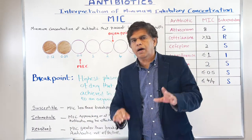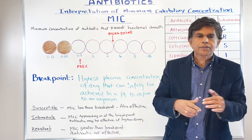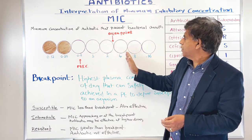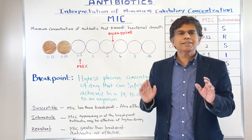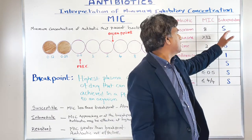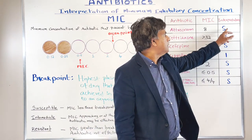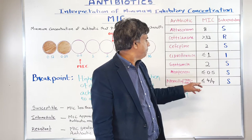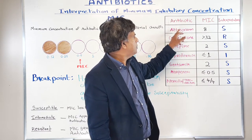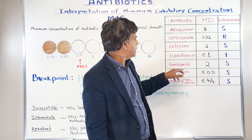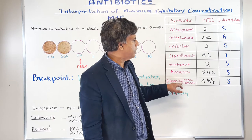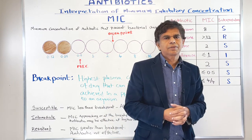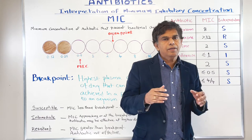The last category is resistant (R) — don't use it, because it's not going to work. That means MIC is greater than the breakpoint. Looking at a real sensitivity report, you might see drugs like aztreonam, cefepime, gentamicin, meropenem, and piperacillin-tazobactam all listed as susceptible. Ciprofloxacin may show intermediate, meaning MIC equals the breakpoint — you may need a bigger dose for that one.